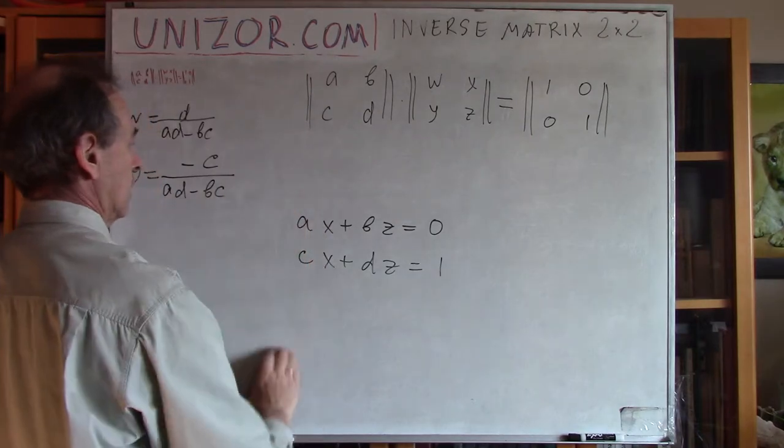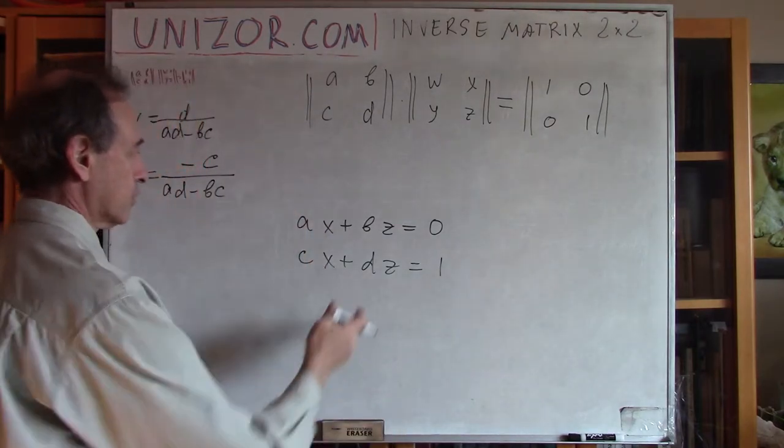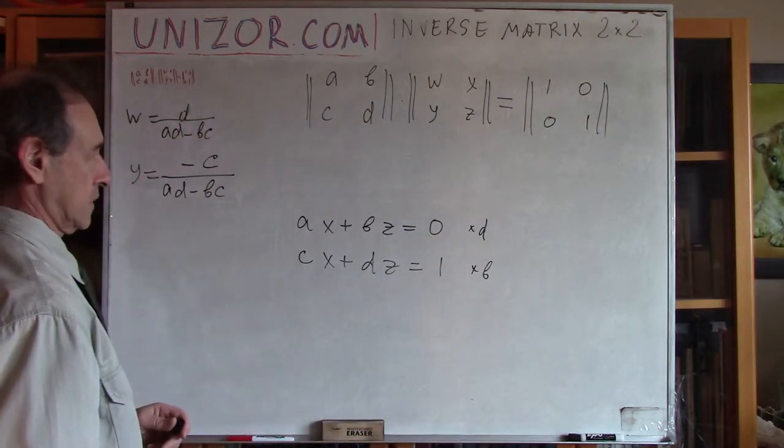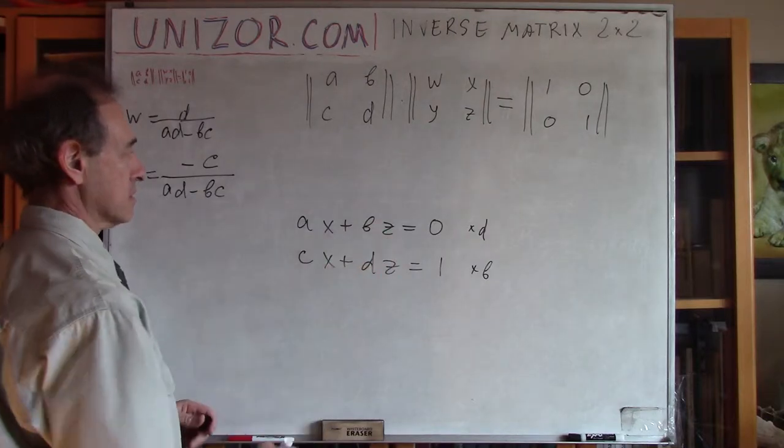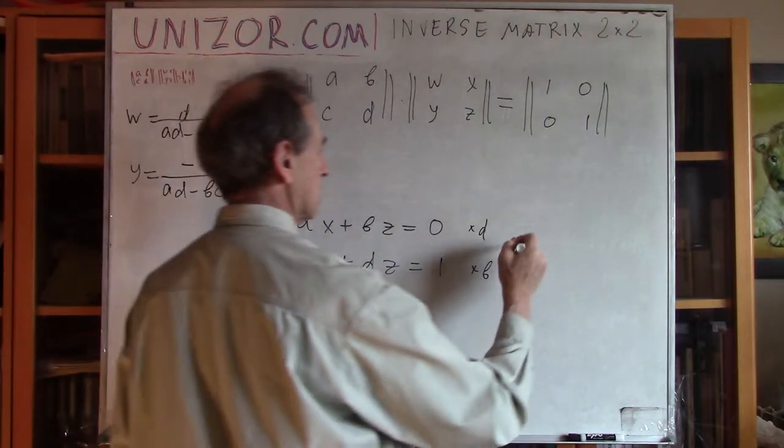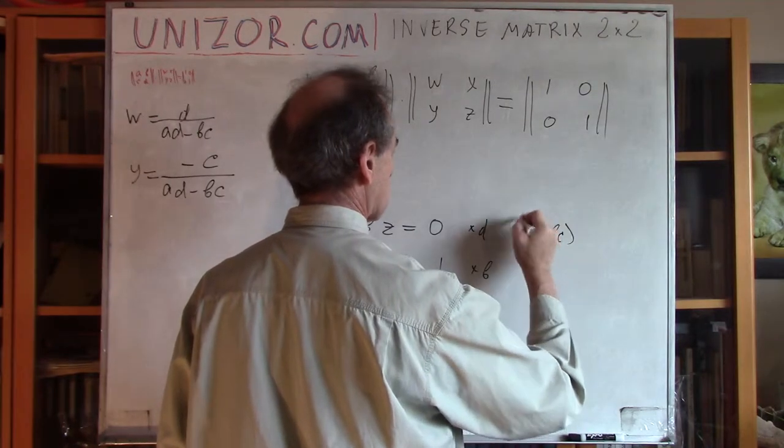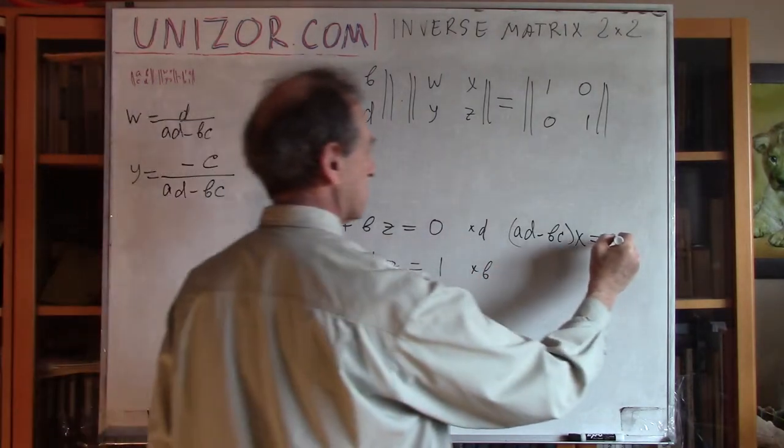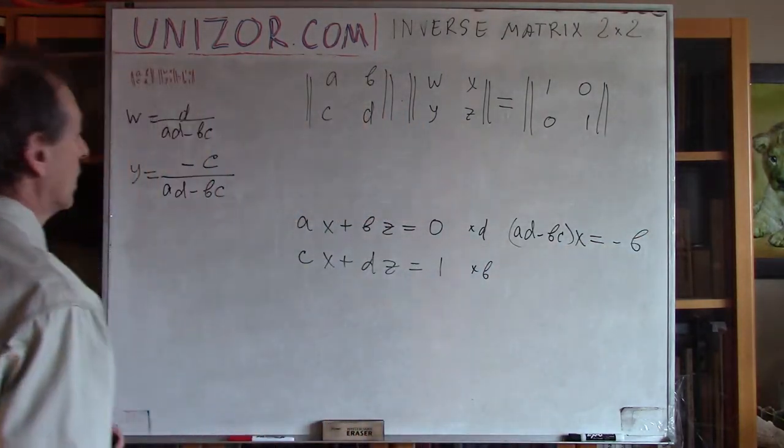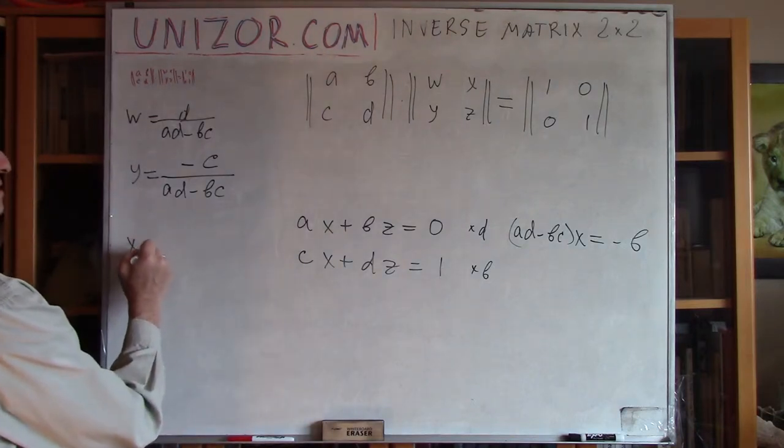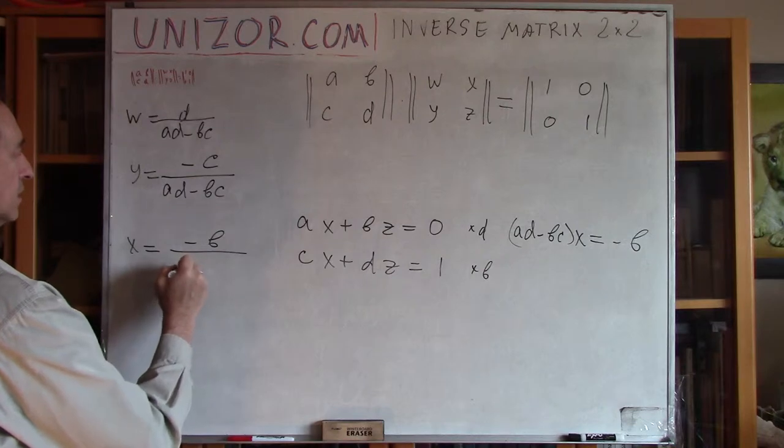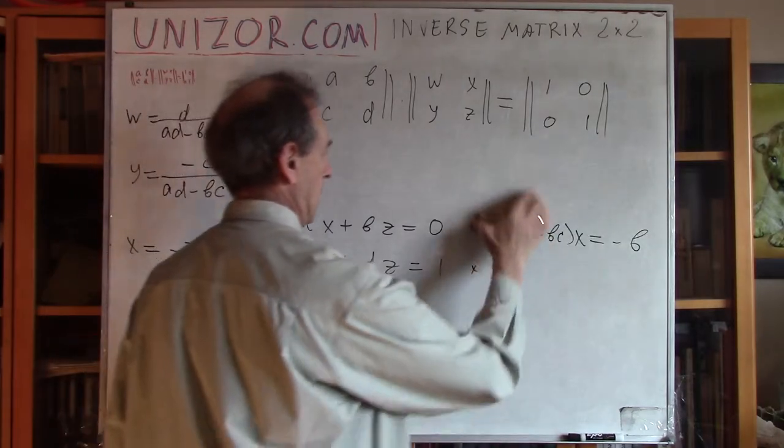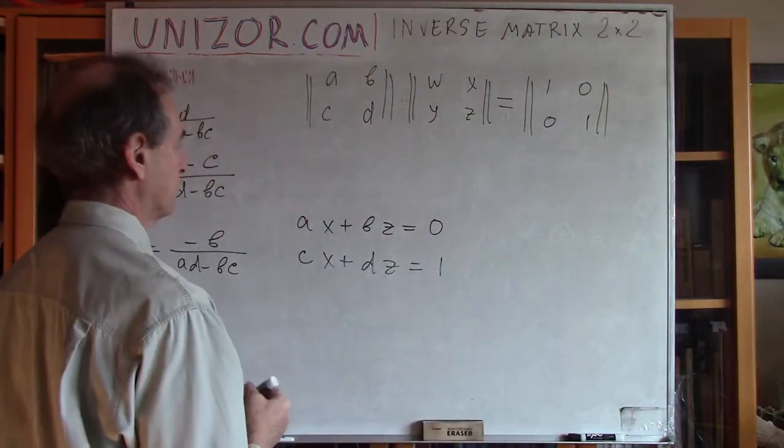Now, this one. Very similarly. To get rid of Z, I multiply this by D, this by D and subtract. So, what I will get? Z will be canceled. A, D minus B, C, A, D minus B, C, X equals. Now, this is by D, this is by B. Minus B. From which, I conclude that X is equal to minus B divided by the same thing. And, finally, to find Z, I multiply this by C, this by A and subtract.